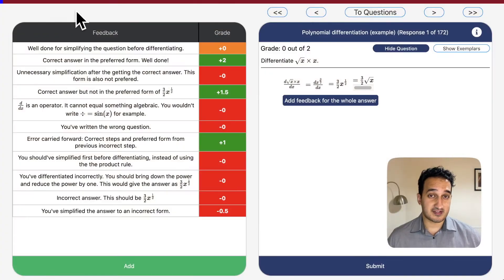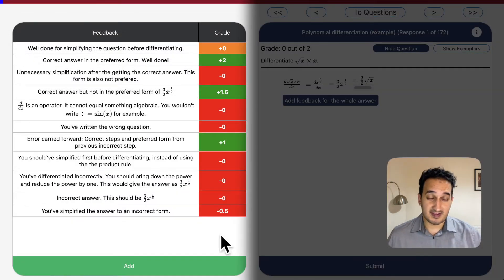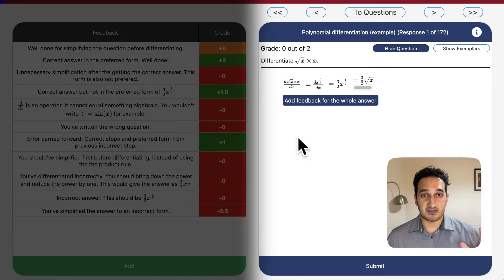Now let's take a look at Grade in action. This is the grading interface. Make a note of the progress bar at the top of the screen. We have some feedback here on the left and we've got the student response on the right.